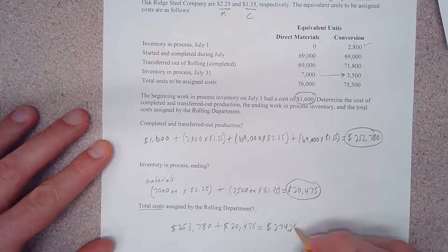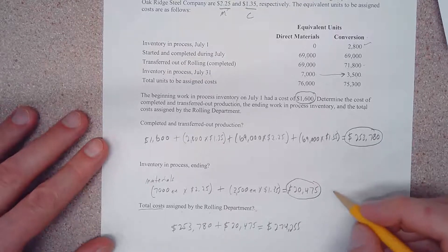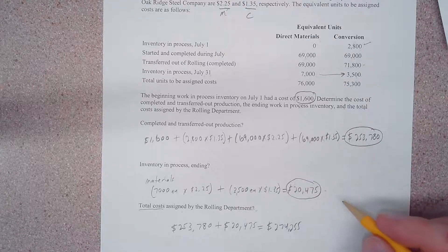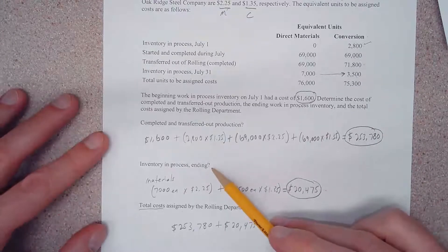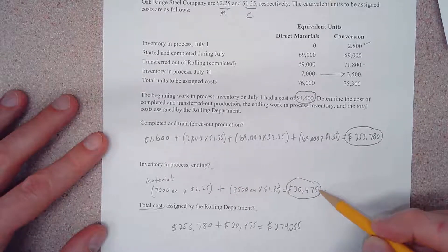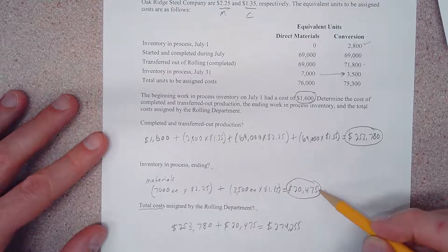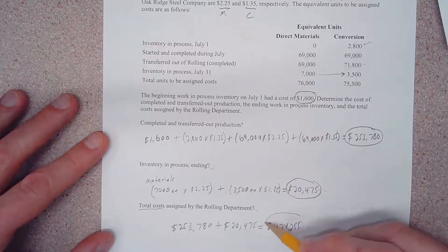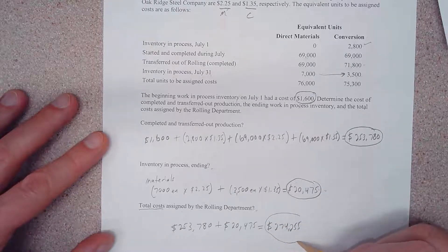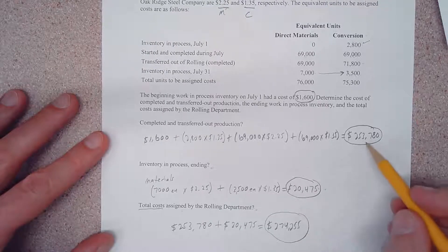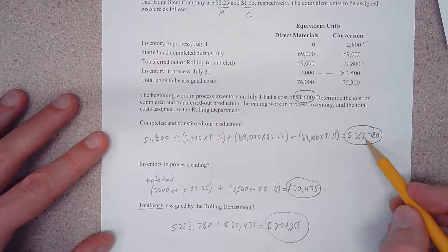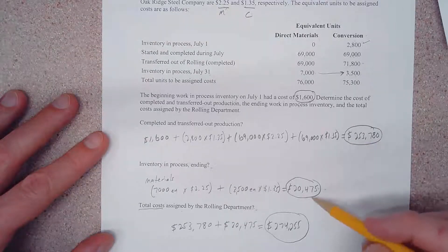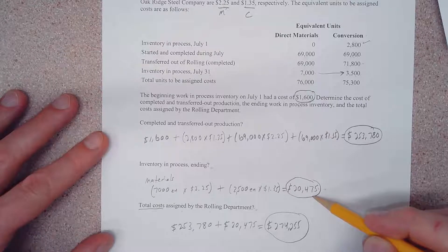$274,255. I want to say one thing about this $20,475 ending inventory for July - this is going to be our beginning inventory value for August. That's not what the question asks us for though. So, total costs assigned by the rolling department consists of the first two parts of the question: completed and transferred out of production, and ending inventory value.